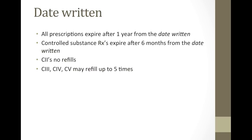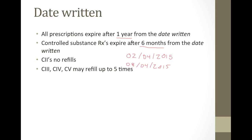The date the prescription is written is also important because all prescriptions expire after one year from the date written. Controlled substance prescriptions expire after six months from the date the prescription was written. So if the prescription was written on February 4th of 2015 for a controlled prescription, it'll expire on August 4th, 2015. For a regular or non-controlled medication, it's going to expire on February 4th of 2016.